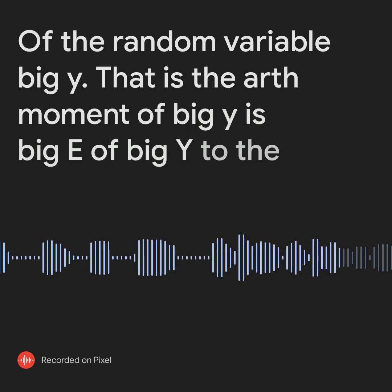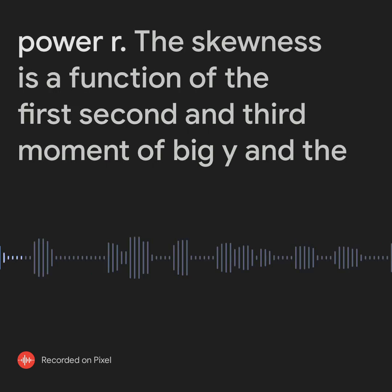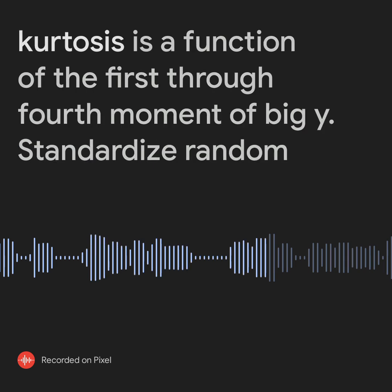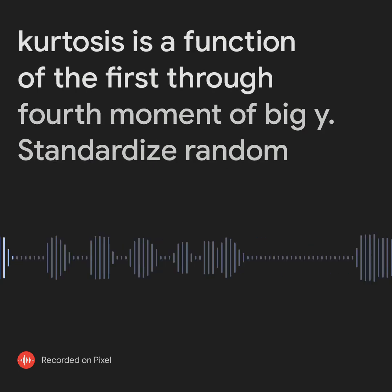That is, the r-th moment of Y is E(Y^r). The skewness is a function of the first, second, and third moments of Y, and the kurtosis is a function of the first through fourth moments of Y.